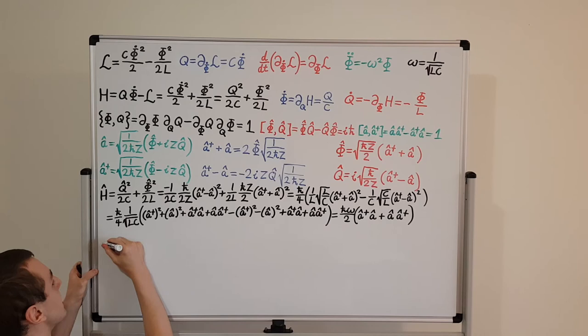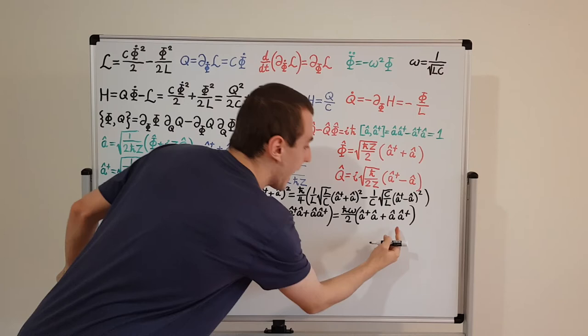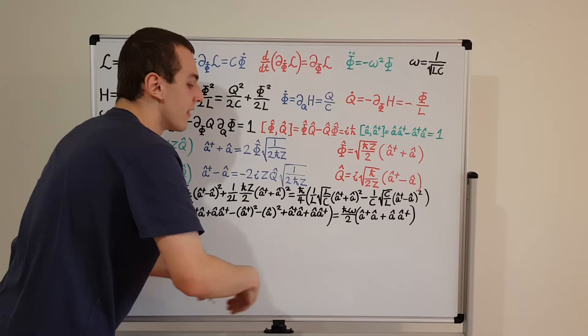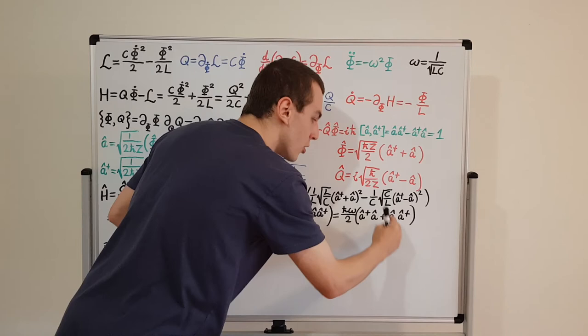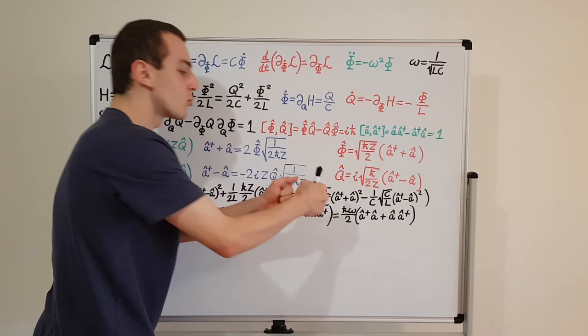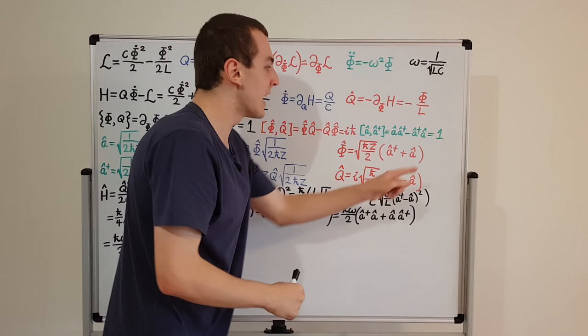Now let's use the commutation relation to write this in a slightly different form. We still have h-bar omega over two, and we keep a dagger a the same. But for the a a dagger term, we want to swap these so they have the same combination. From the commutation relation, a a dagger minus a dagger a equals 1, so moving a dagger a to the other side: a a dagger equals a dagger a plus one.